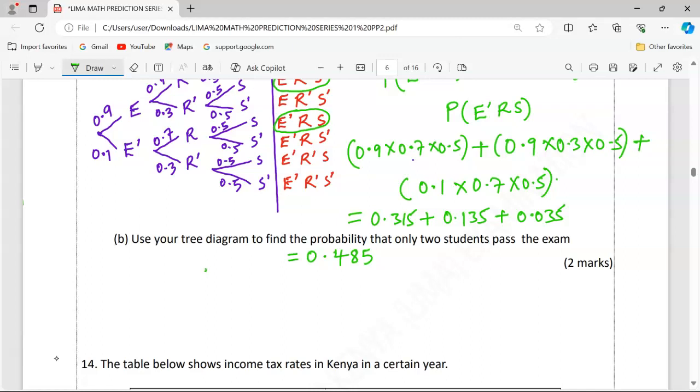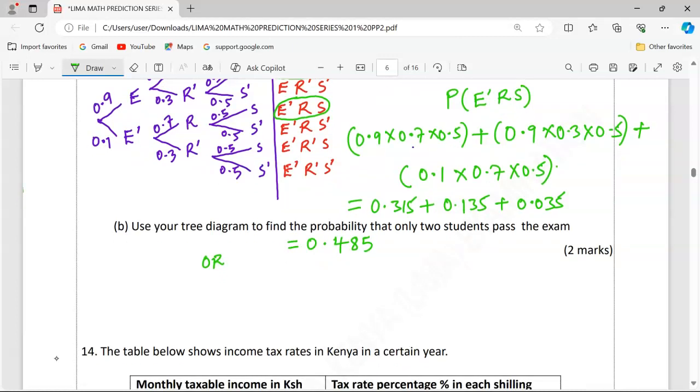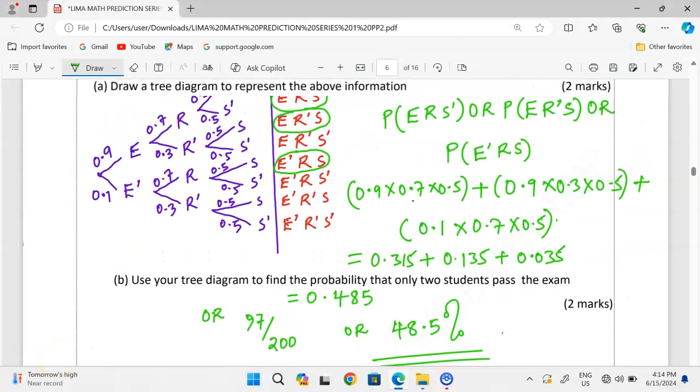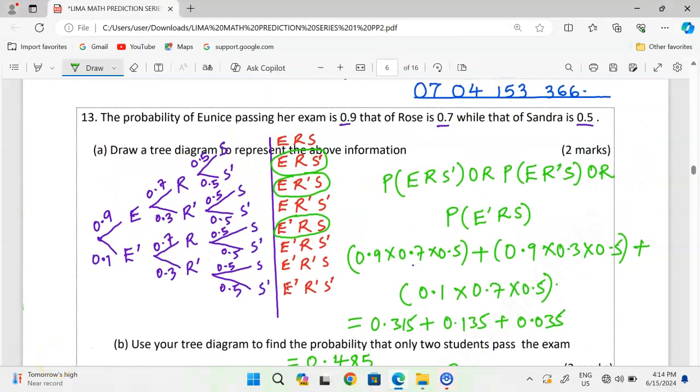The same probability can be expressed as a fraction, whereby we will have 485 out of 1,000. And, when we simplify by 5, we are going to get 97 out of 200. The same can also be expressed as a percentage, whereby we multiply by 100. This is going to be 48.5 percent. So, thank you so much for following. Subscribe and share this lesson with your friends.